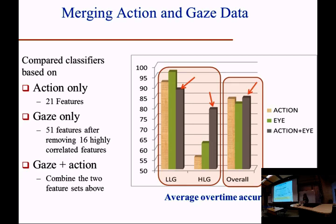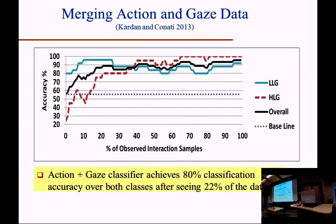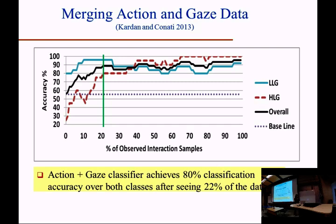Using the action-plus-gaze classifier, we achieve 80% classification accuracy after seeing about 22% of the interaction, which means we can start giving feedback fairly early. The system does need to learn a little bit about the user first, just as a human tutor would have to observe the student before providing help. We see we can do it early enough.